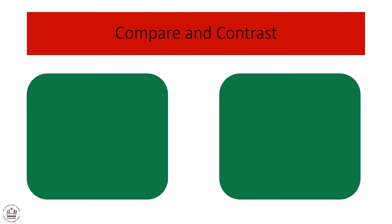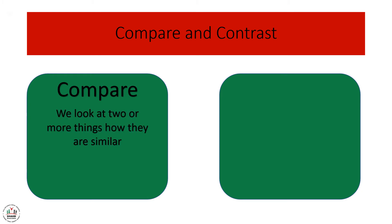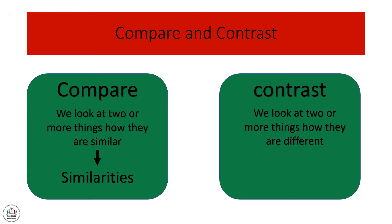Now, how can we compare and contrast? We will define each term. In comparing, we look at two or more things and how they are similar — so we look for similarities. In contrasting, we look at two or more things and how they are different — so we look for differences.